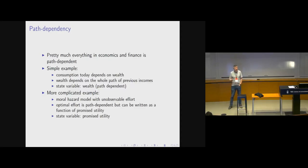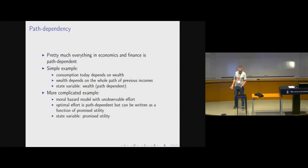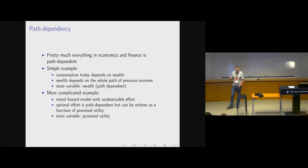At the same time, many of these models — you can still summarize path dependency in a small number of state variables. For example, wealth is a typical state variable which you can use to rewrite the problem recursively. A more complicated example is the moral hazard model where effort is unobservable. In limited commitment models, path dependency is generic — your actions in the optimal contract depend on the whole history of previous actions.